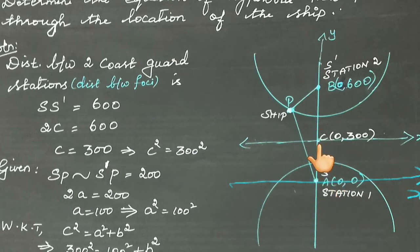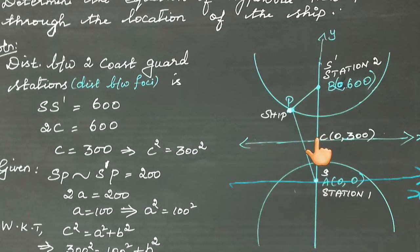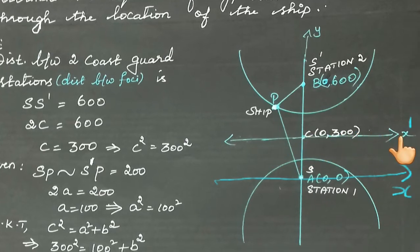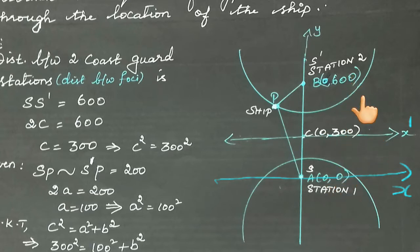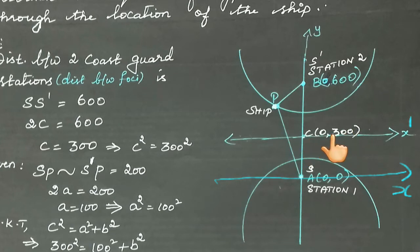However, the center is not at the origin here, because the center of the hyperbola lies at the midpoint of the two foci A and B. The midpoint is (0, (0+600)/2) = (0, 300). Therefore the center is at (0,300), so h = 0 and k = 300.